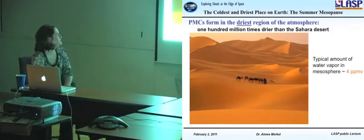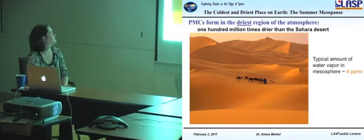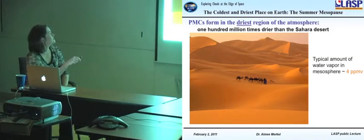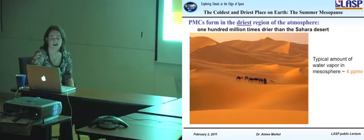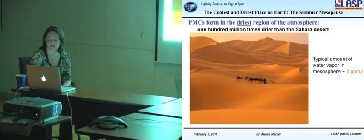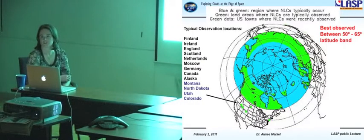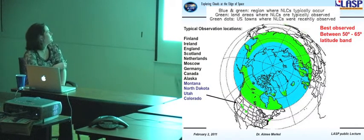It's also the driest region in the atmosphere. The typical amount of water vapor in the mesosphere is 4 parts per million by volume. That's 100 million times drier than the Sahara Desert. Very dry. There's just not much water up there. So it's actually a miracle that these clouds form, that there's even enough water. And what does it is that it's so cold. The amount of water vapor in the atmosphere can actually form into ice crystals.